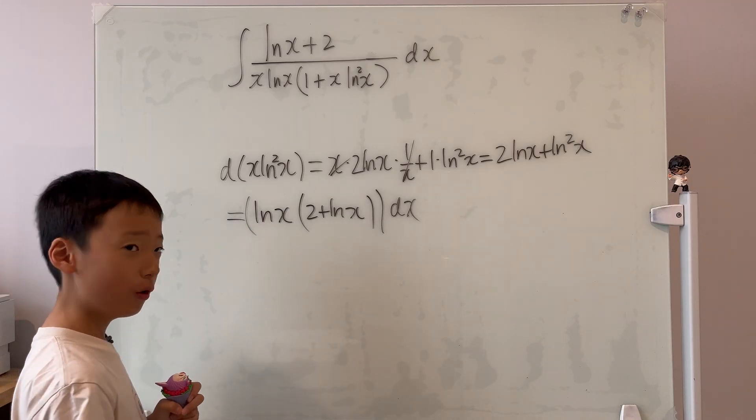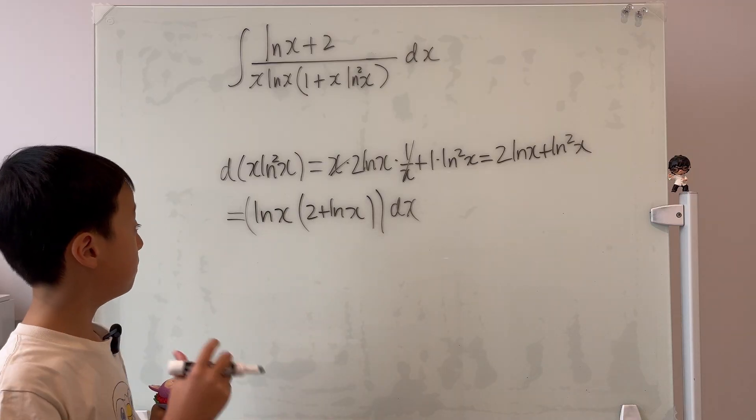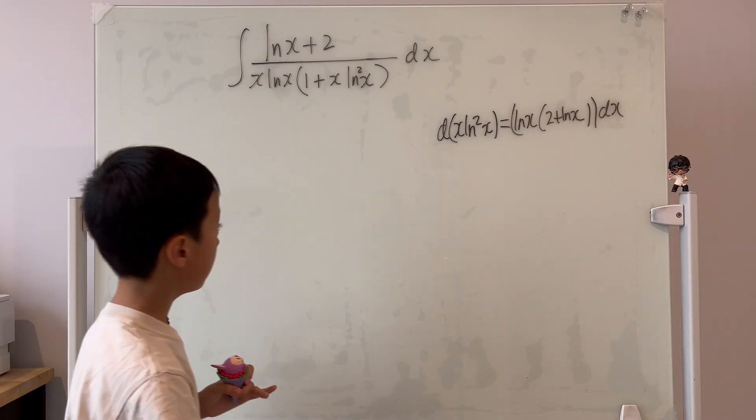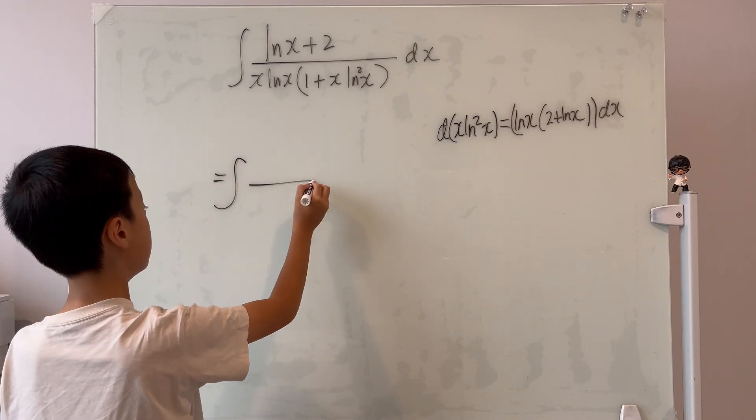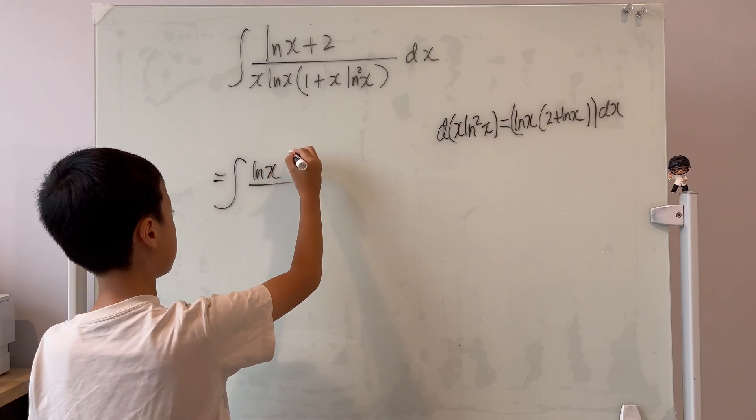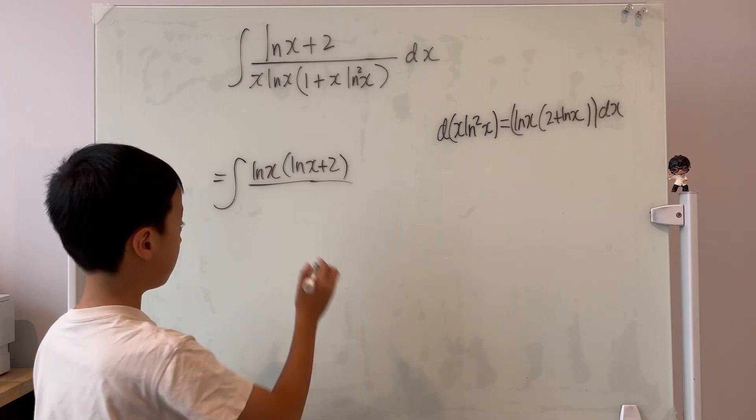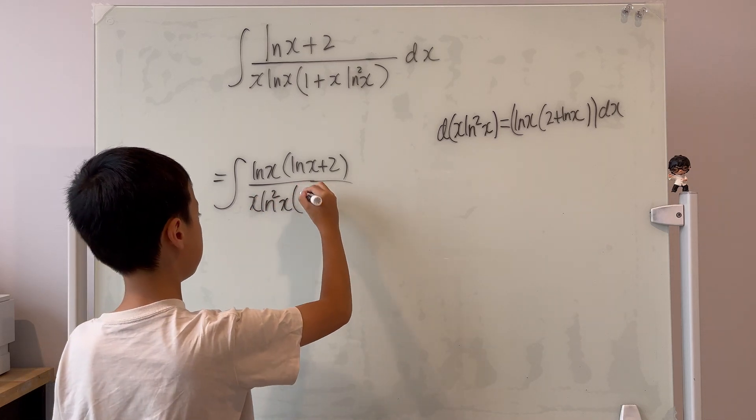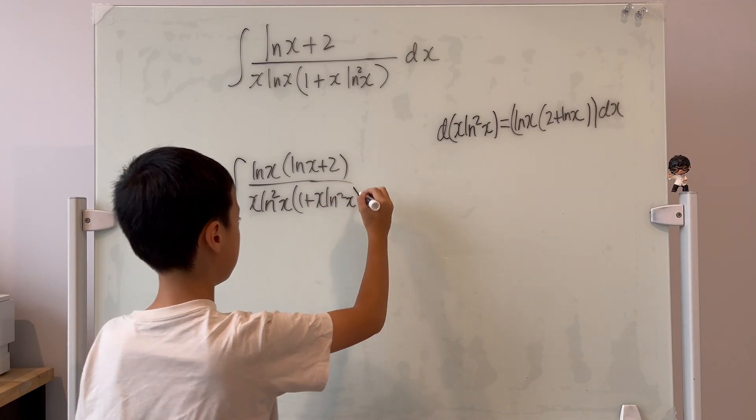But here we have a ln x. On the top, we don't. So this implies that we should multiply a ln x on the top and bottom, right?